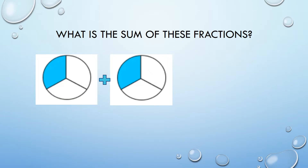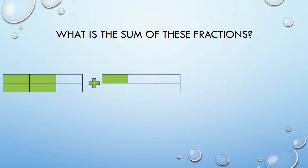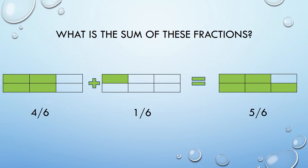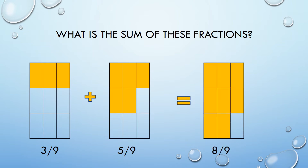Now have a seat and add up these fractions: one-third and one-third. If you came up with two-thirds, you were correct. Here's another set: four-sixths plus one-sixth. What's the sum of these fractions? The answer is five-sixths. What is the sum of these fractions? Three-ninths plus five-ninths. The answer is eight-ninths.